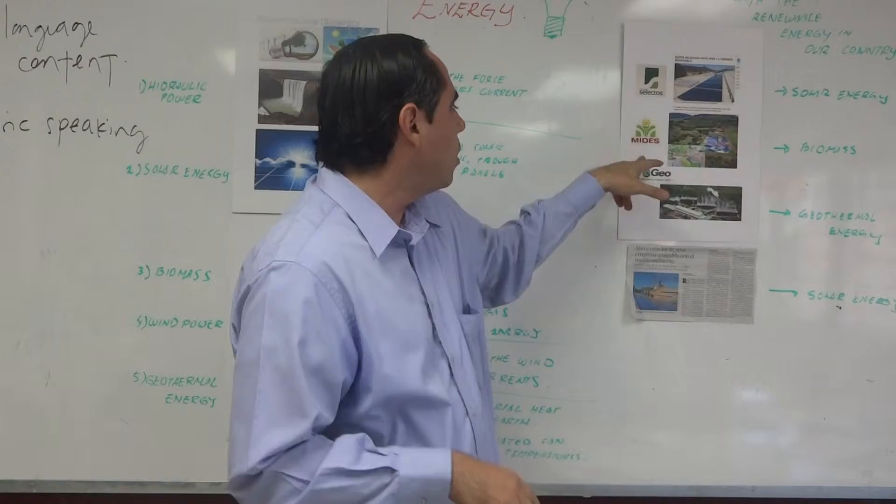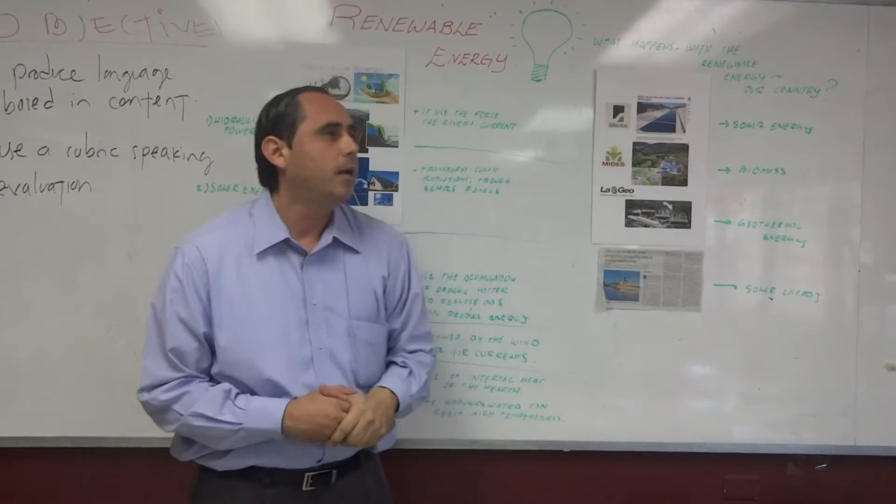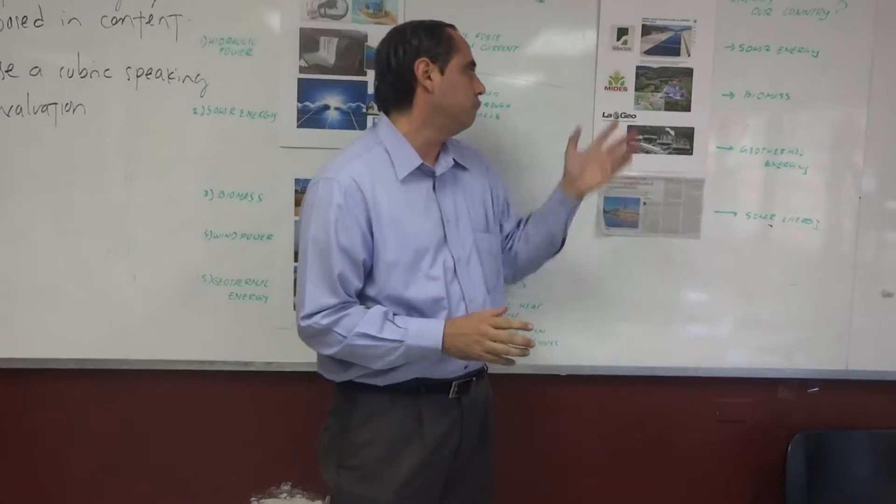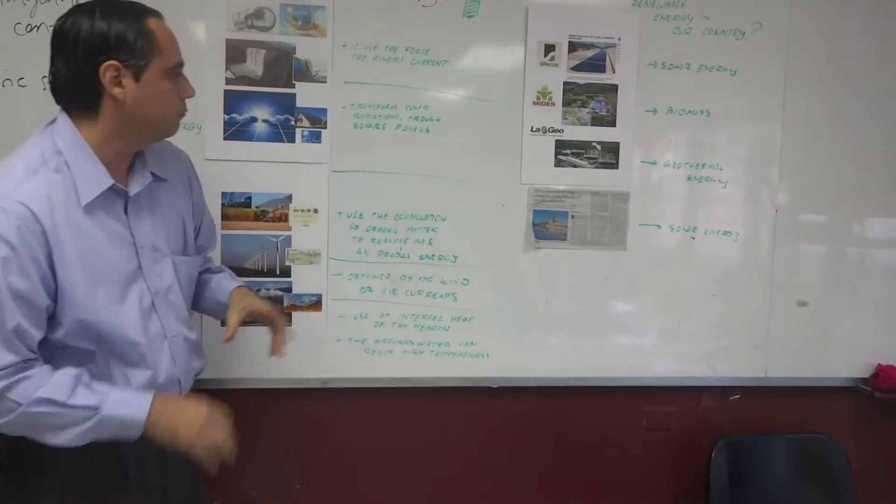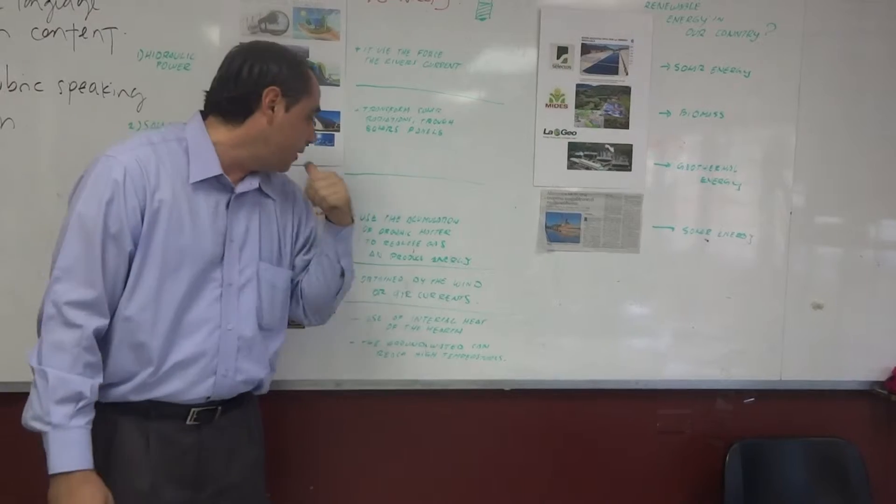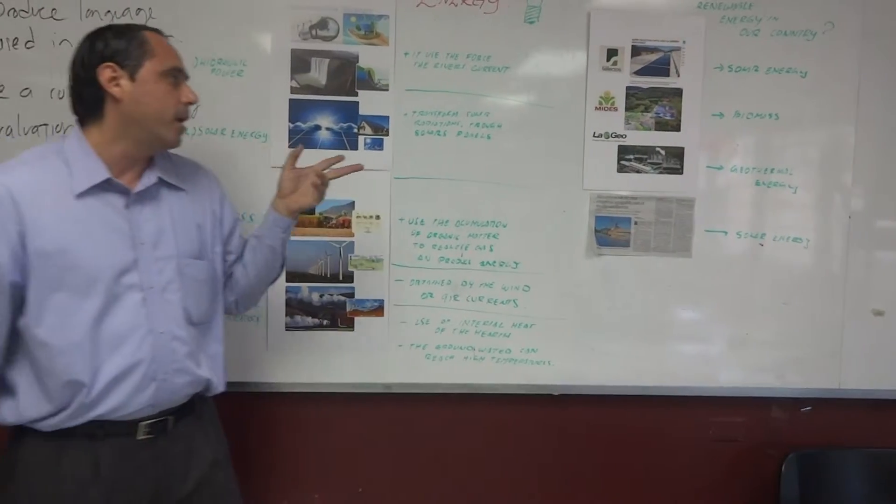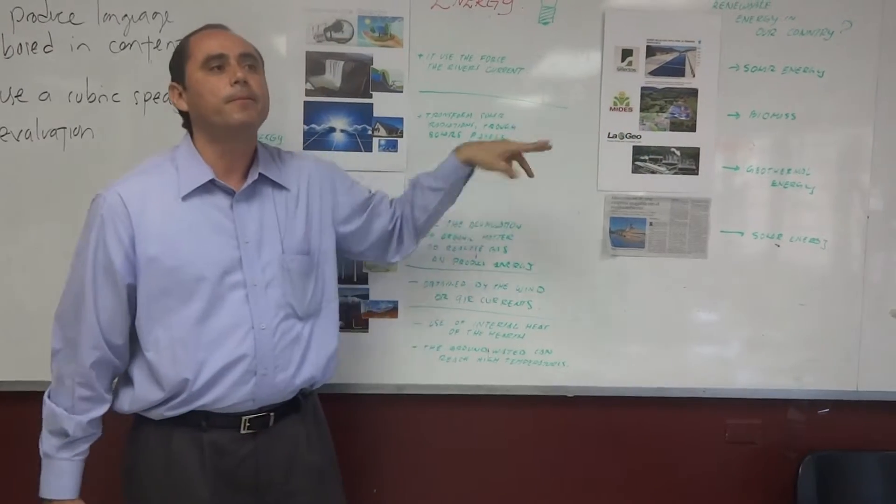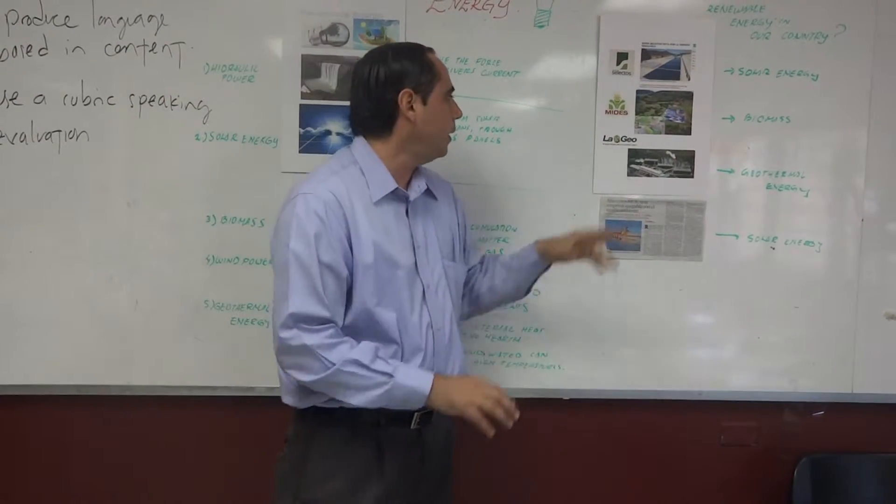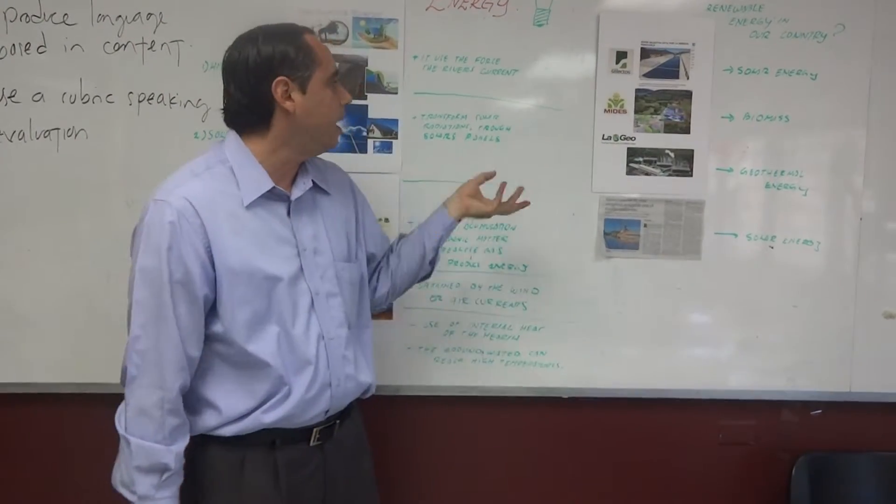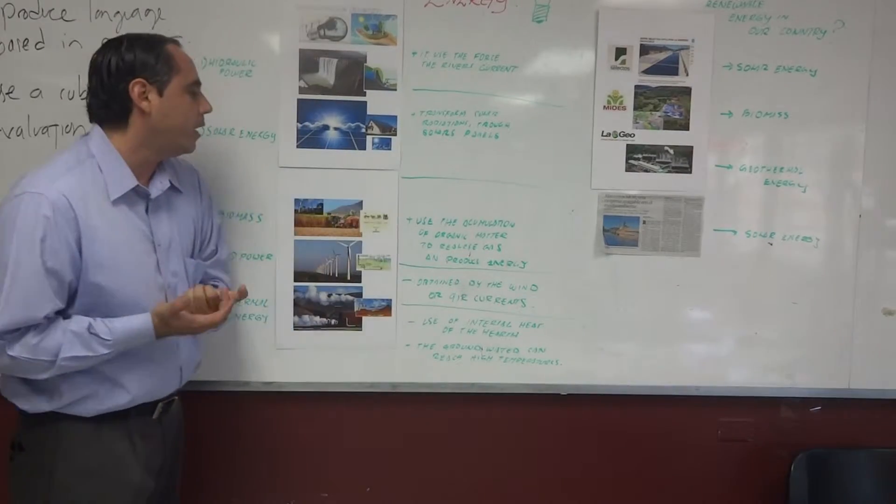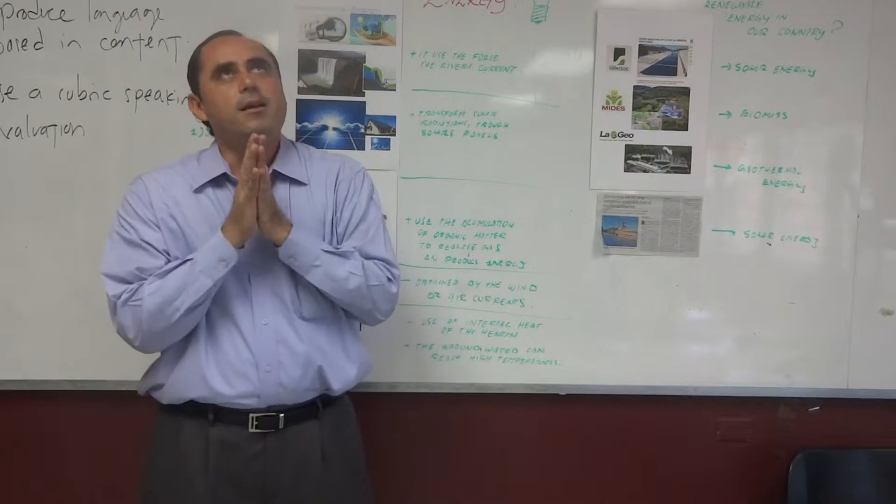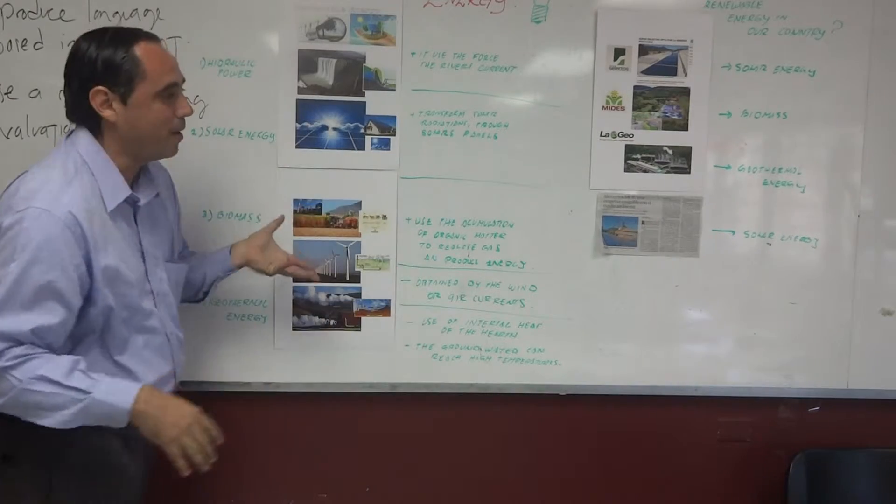The second option is biomass. It is used by wineries. It is a type of energy that accumulates organic matter. This company can accumulate the organic matter and transform it into energy through biomass.